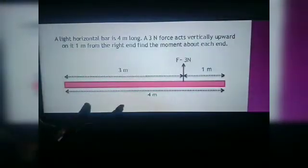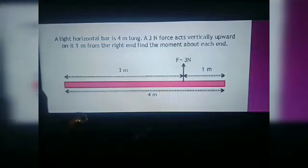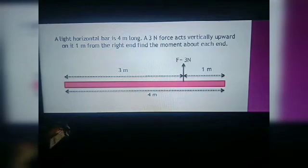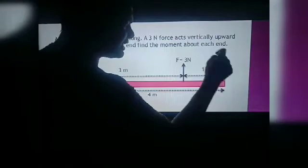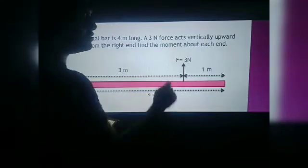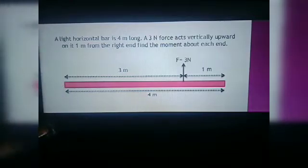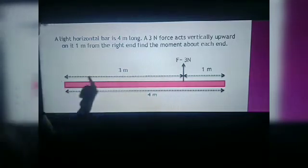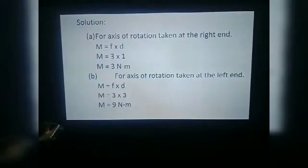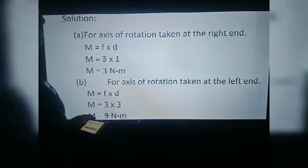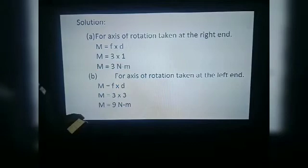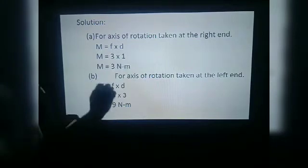Let's take an example for calculating moment of force. We have a rod with a force of 3 N applied. First, with the pivot point at the right end: the distance is 1 m, so the moment of force M = F × D = 3 × 1 = 3 Newton meter. Always remember the unit is very important to write.